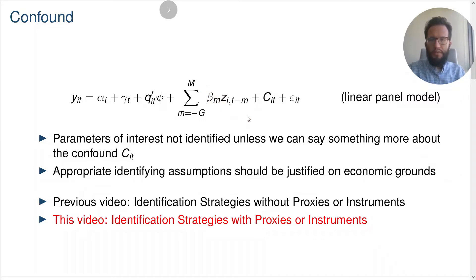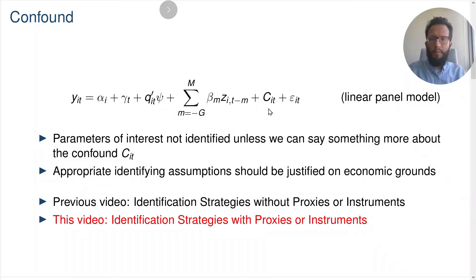This unobserved confounder can be related to the policy variable of interest, and unless we can say something more about the confounding variable C_IT, we're not going to be able to identify the parameters of interest, beta m. Identifying assumptions on the behavior of C_IT should be justified on economic grounds. On the previous video, Simon discussed identification strategies without proxies or instruments, and on this video, I'll talk about identification strategies with proxies or instruments.